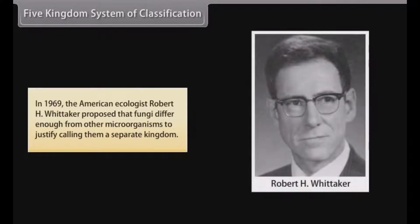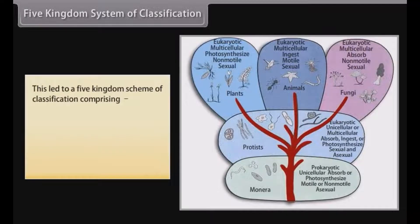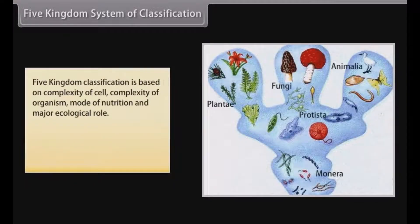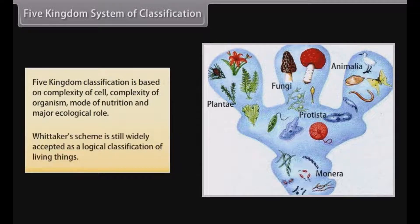Five kingdom system of classification: In 1969, the American ecologist Robert H. Whittaker proposed that fungi differ enough from other microorganisms to justify calling them a separate kingdom. This led to a five kingdom scheme comprising Monera, Protista, Fungi, Plantae, and Animalia. Five kingdom classification is based on complexity of cell, complexity of organism, mode of nutrition, and major ecological role. Whittaker's scheme is still widely accepted as a logical classification of living things.